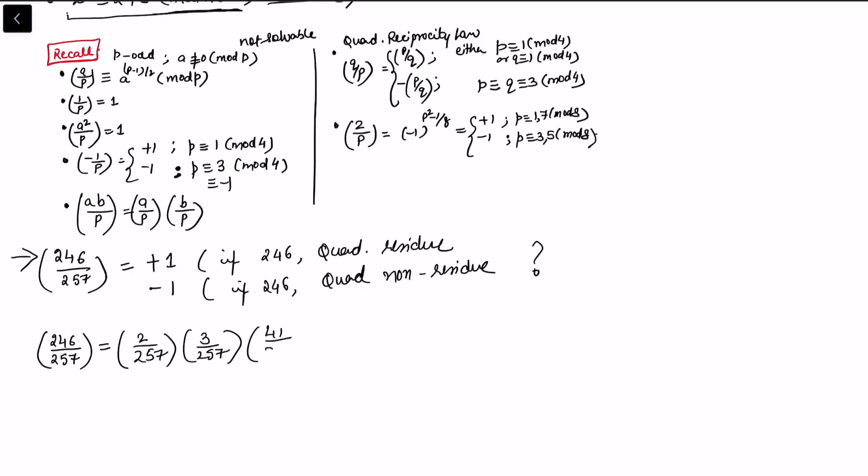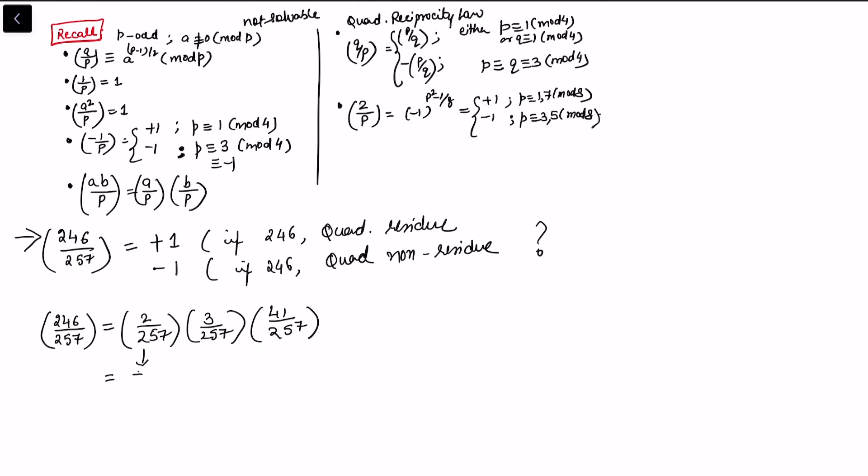Now this term (2/257) is +1 because 257 is congruent to 1 mod 8. You can see that 256 is divisible by 8. Here I have used this property: (2/p) = +1 if p ≡ 1 (mod 8). So the remaining term that we are left with is simply (3/257) and then (41/257).